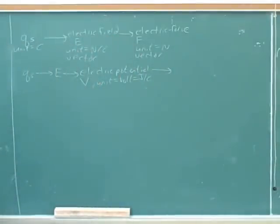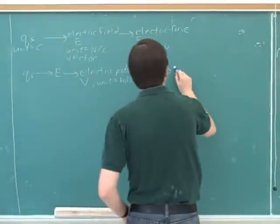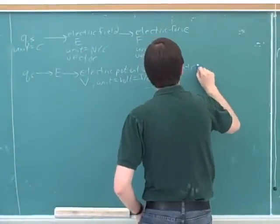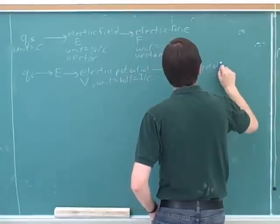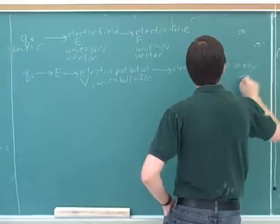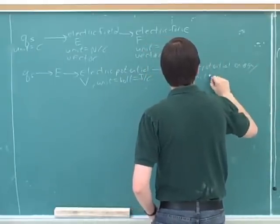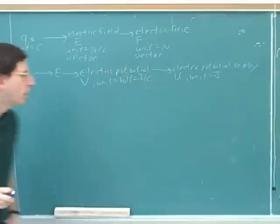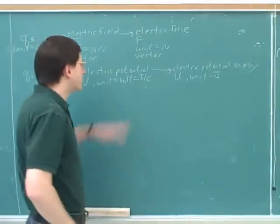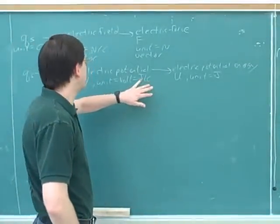What's the symbol for electric potential energy? The symbol is capital U, but you're right that the unit for that is a joule. Good. And that should help us to see that you were right over here. So it was good that you knew what a volt was.